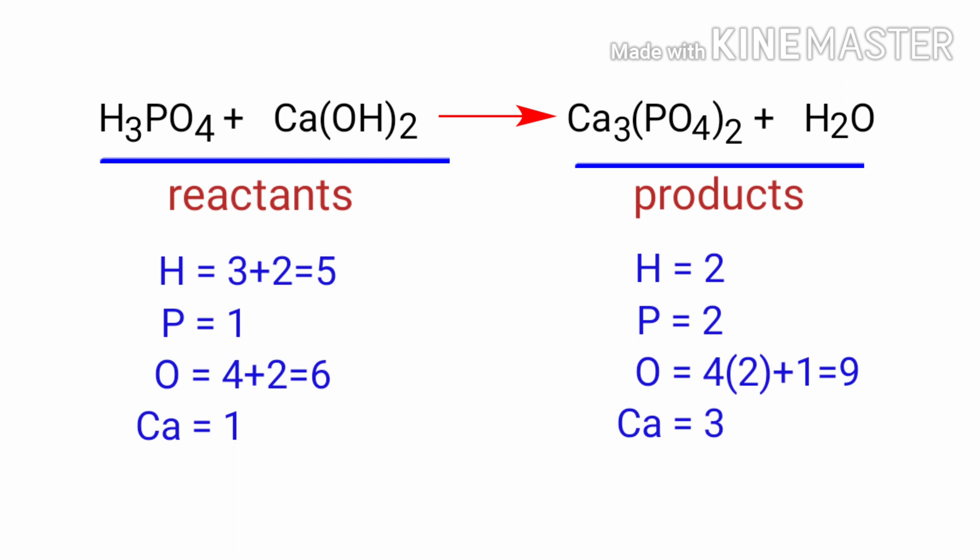And on the products side there are 2 hydrogen atoms, 2 phosphorus atoms, 9 oxygen atoms and 3 calcium atoms present. The number of atoms are not balanced on both sides.